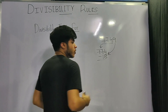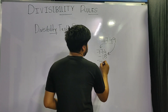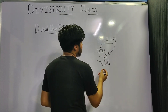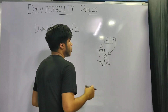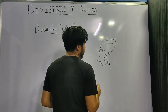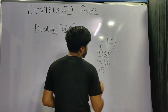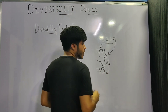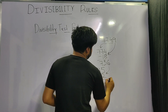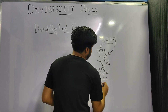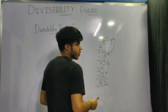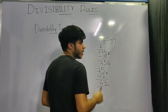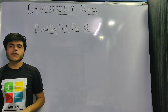After subtracting, we get 756. I'm still not sure whether 756 is divisible by 7, so I'll apply the rule again: 75 minus twice its unit digit (2 × 6 = 12) gives 63. Since 63 is divisible by 7, the original number 7749 was indeed divisible by 7.